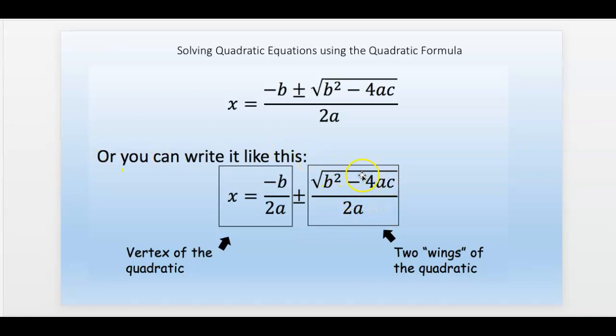If the second term here, the plus-minus side, is zero, then the vertex is the solution. It just touches the X-axis at the vertex.